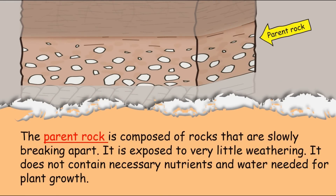The parent rock is composed of rocks that are slowly breaking apart. It is composed of very little weathering. It does not contain the necessary nutrients and water needed for plant growth.